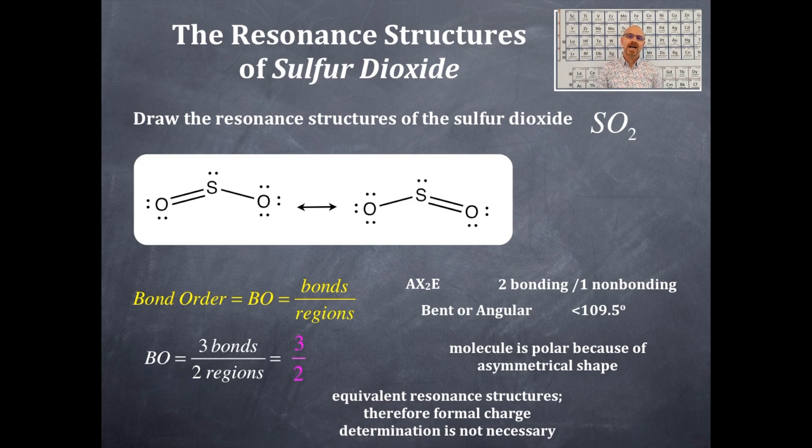Resonant structures is a hybrid of the two, so it's a superimposition of these two structures is actually the best structure for sulfur dioxide.